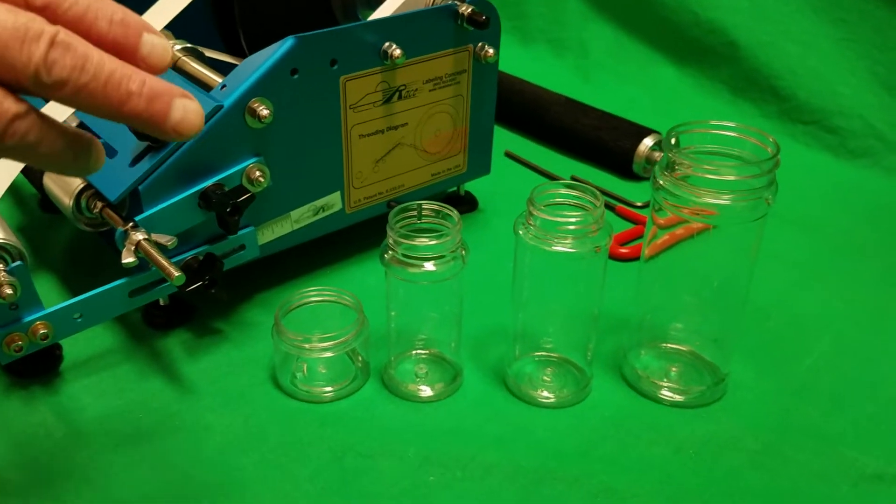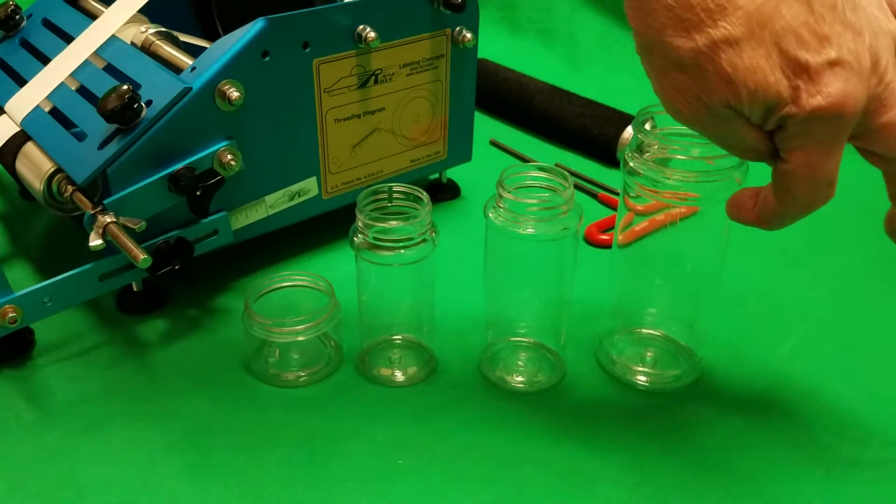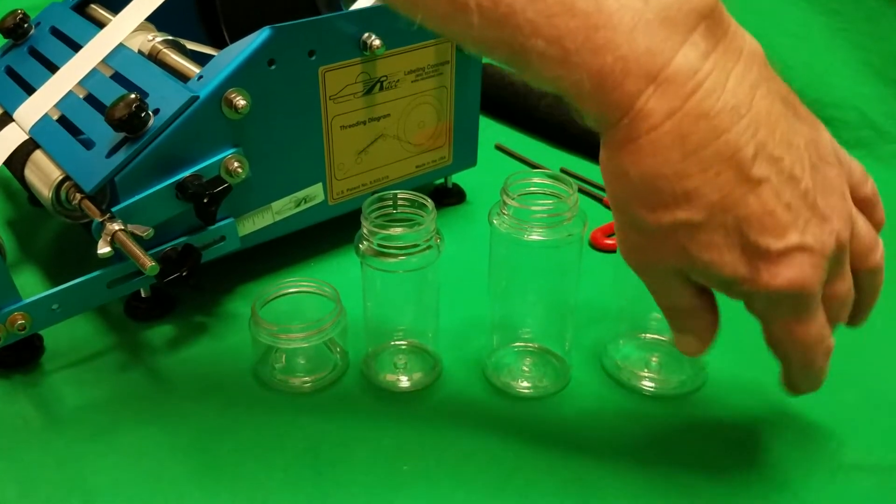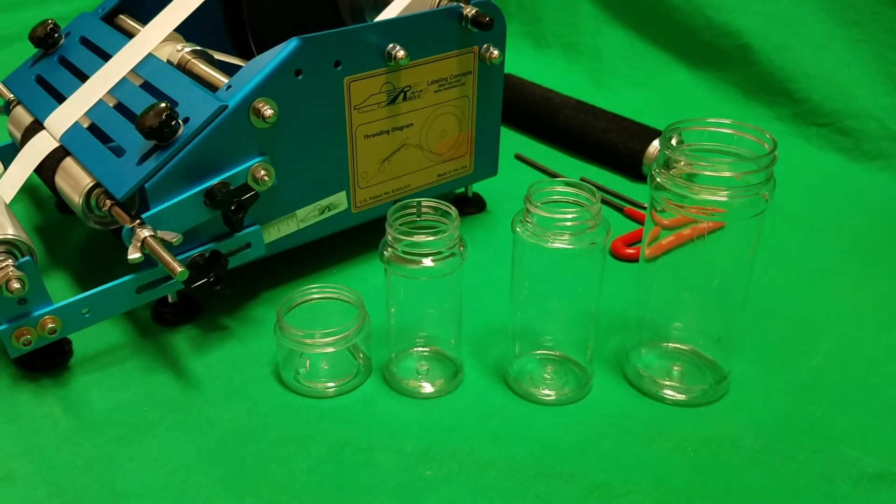Three of them, the three larger ones, have indented label panels. In other words, they have a ridge at the top and bottom of the panel where the label goes is indented a bit.